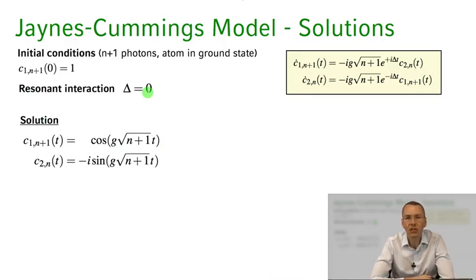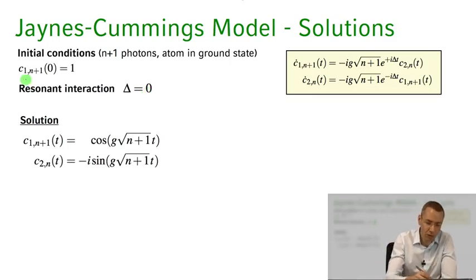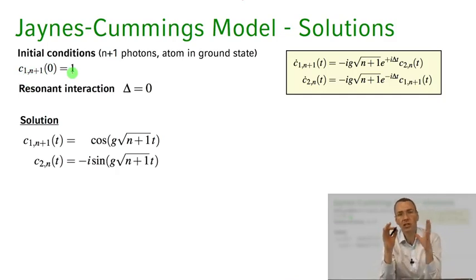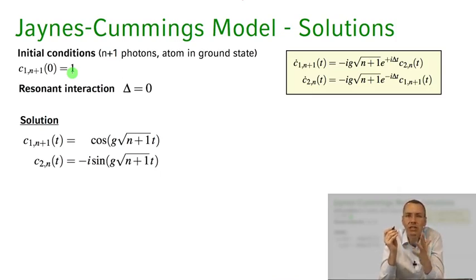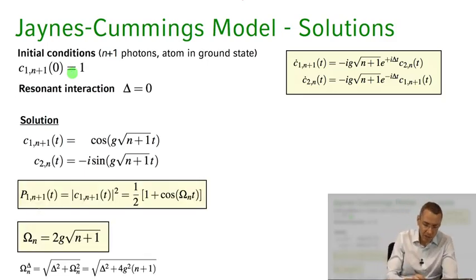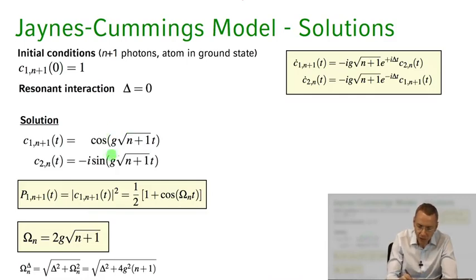Let's look at solutions for certain initial conditions. Take the case where we have n+1 photons and the atom initially in the ground state at t=0, so c₁,ₙ₊₁(0) = 1 and all other coefficients are zero. For the simple case of resonant interaction with detuning set to zero, the solutions for the complex coefficients are cosinusoidal and sinusoidal functions. The probability of being in state 1 — atom in the ground state with n+1 photons — as a function of time gives us Rabi oscillations.